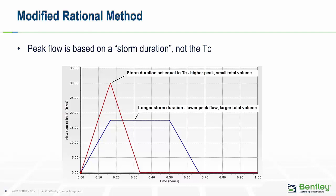Here's another example showing how the hydrograph is constructed. The red hydrograph has a storm duration equal to the time of concentration, producing a triangular hydrograph — a high peak because intensity is higher with a shorter storm duration, but it doesn't last as long. Contrasted with the blue line, a longer storm duration results in a lower intensity but it lasts longer, tending to produce a larger volume.